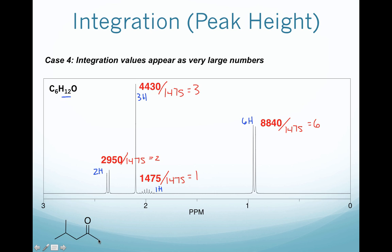Looking at the structure, we have a methyl group corresponding to 3 hydrogen for one signal, a CH2 corresponding to another signal, another CH2 around shift 2, and finally two equivalent methyl groups showing up as a doublet — 3 plus 3 equals 6 — which is why we get an integration of 6 hydrogen for that signal.